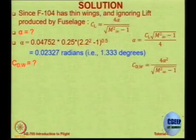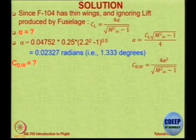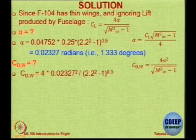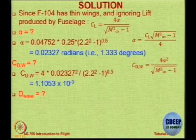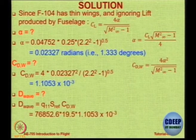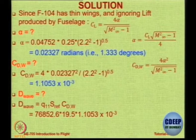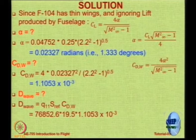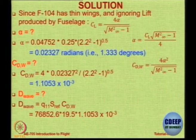Now, the wave drag coefficient is 4α² / (M∞² − 1). Substituting gives CD_wave ≈ 0.00111. Now calculate the actual drag: CD_wave × Q × S. Note there is no need to use G again because Q is already in N/m², so the answer is in Newtons. The value is approximately 1651 Newtons.